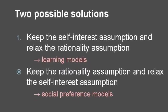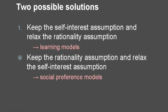Theorists differ in which of these conclusions they prefer. Those who prefer to retain the self-interest assumption and relax the rationality assumption develop what they call learning models. If you're interested in following up on those models, you can check out a paper by Alvin Roth and Ido Erev about learning in extensive form games, published in 1995 in a journal called Games and Economic Behavior. My focus in the rest of this podcast is on a different family of models called social preference models.